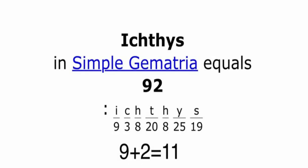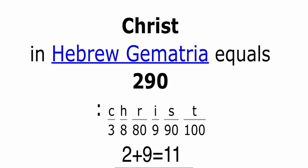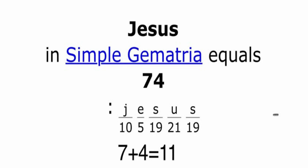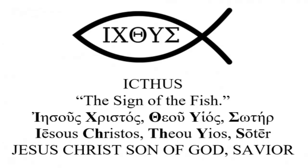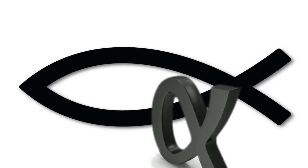What do you think? Am I seeing things or can you see what I'm trying to get across — that the alpha symbol has morphed into this symbol for God and Jesus? That symbol on screen is known as the fish symbol. In gematria it accidentally adds to 11. And the fish symbol in gematria also adds to 11. Some say it's Christ — another 11 in gematria. Some will say it's Jesus — Jesus adds to 11 in gematria. The sign of the fish: Jesus Christ, Son of God, the Savior. Carl Jung said the fish was used as a name for the God who became man.